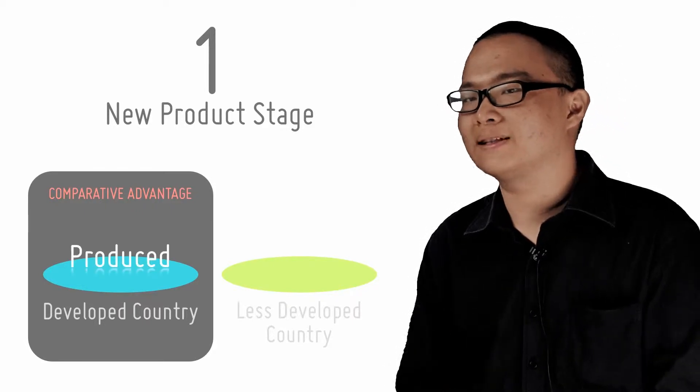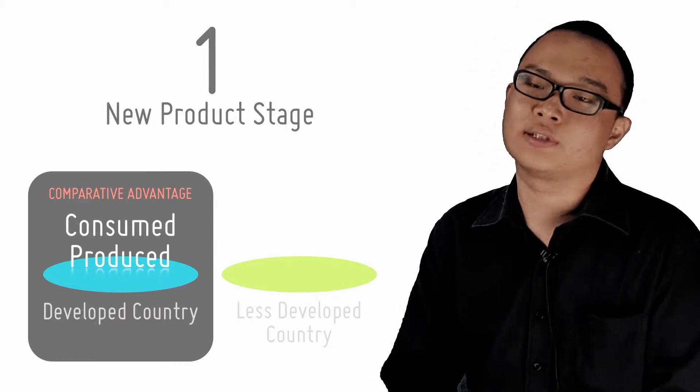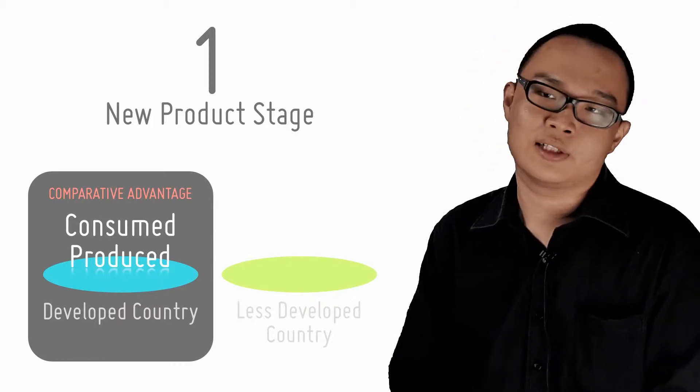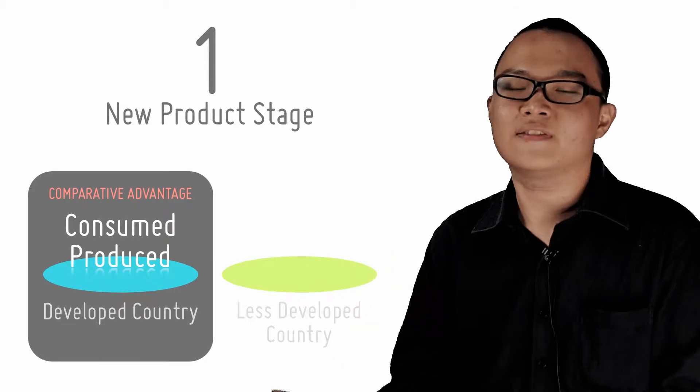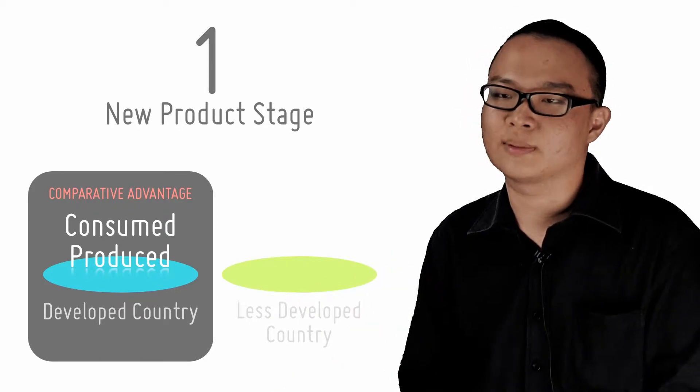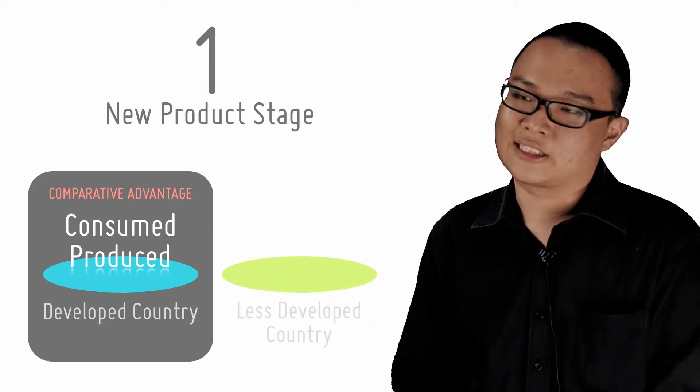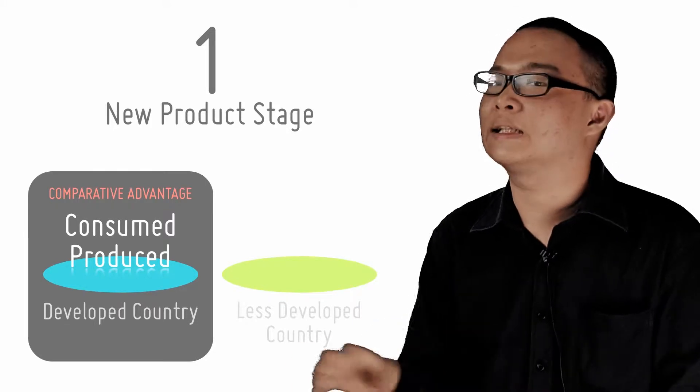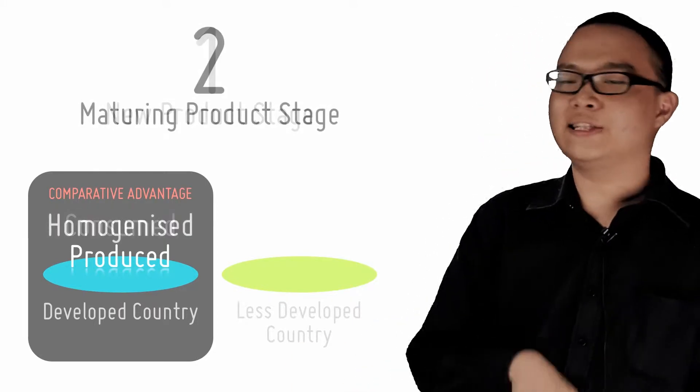Stage 1 is the new product stage. The product is produced and consumed in the origin country, most likely a developed country, in order for the firm to observe the market response and because of protection from the relevant patent laws. The comparative advantage at this stage is in the developed country.